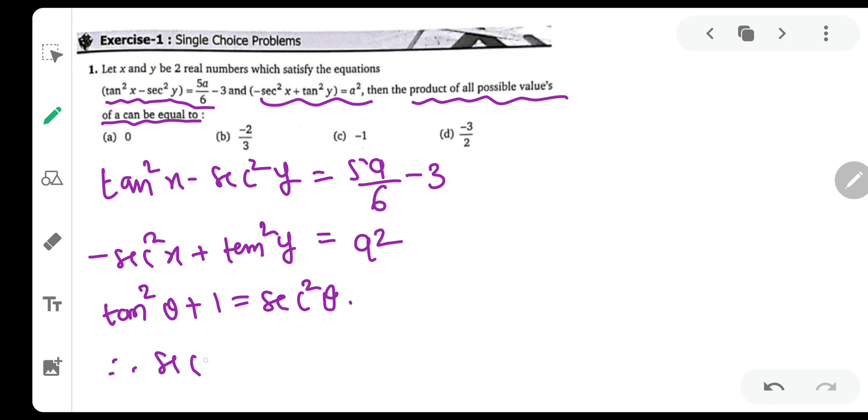That means sec square theta minus tan square theta is equal to 1. And if you see the reverse of this, for example, tan square theta minus sec square theta, then the answer will be minus 1. It is as good as multiplying both sides by minus 1.